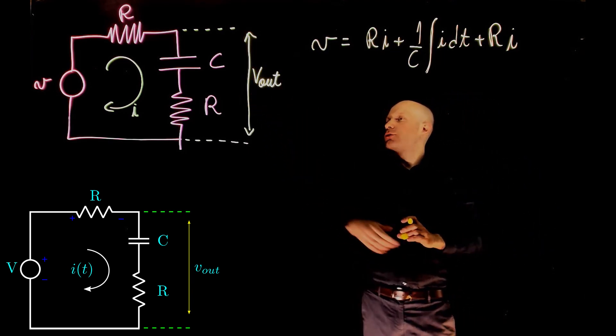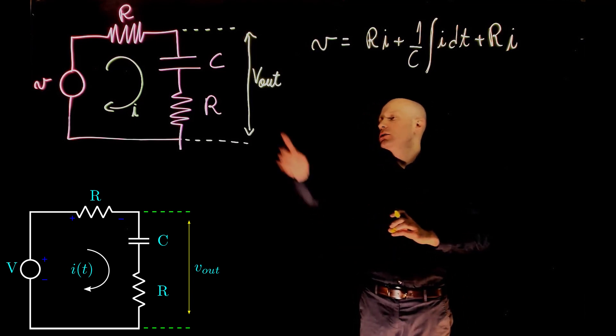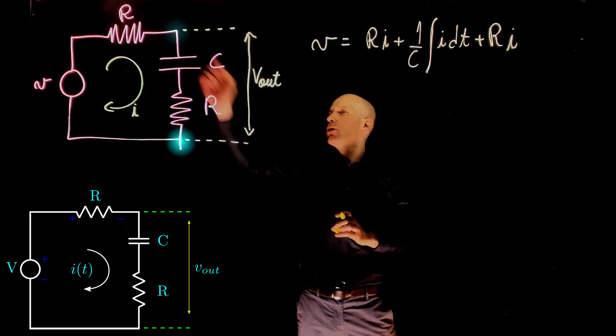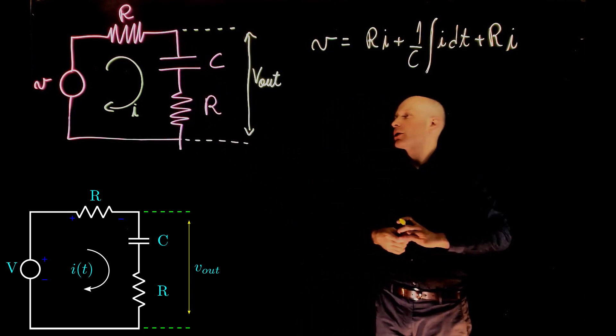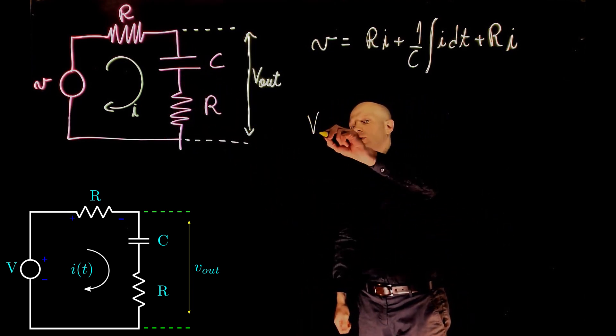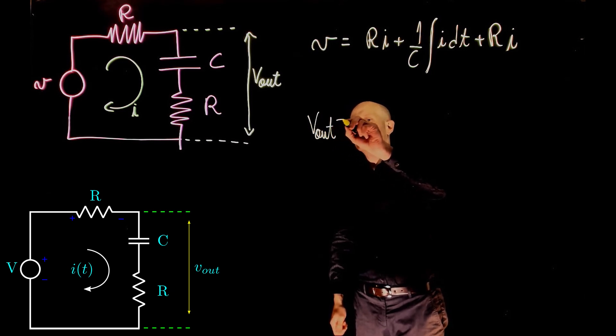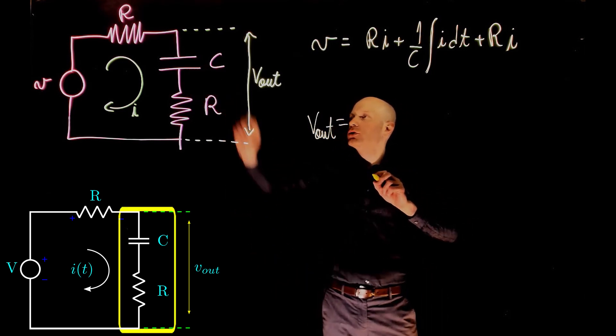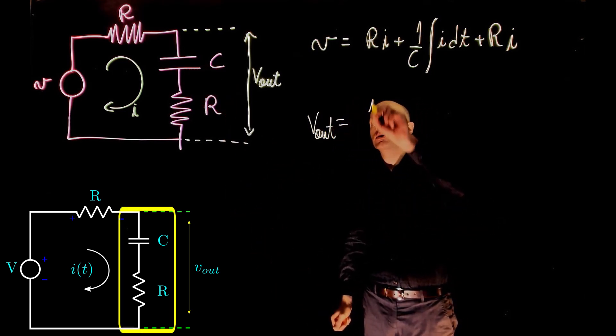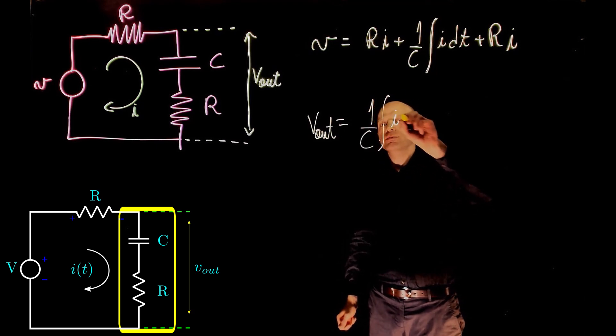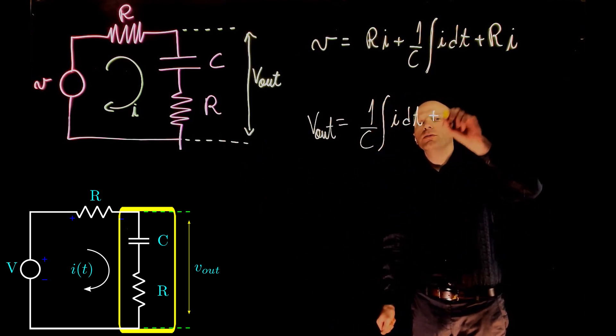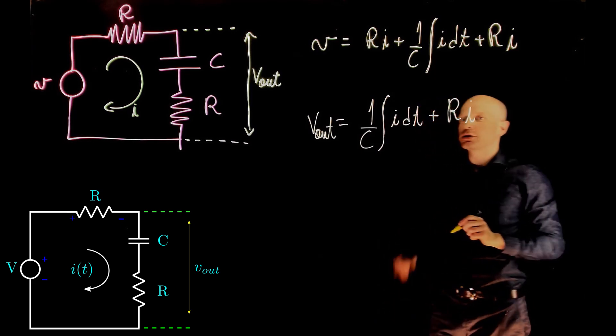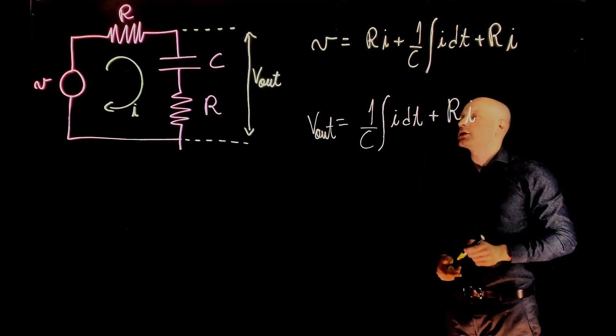We can also create another expression for the output voltage. The output voltage is measured between these two points, which is simply the voltage drop across C plus the voltage drop across R. So Vout equals to the voltage drop across the capacitor, 1 over C integral of I dt, plus the voltage drop across the resistor, that is R times the current.